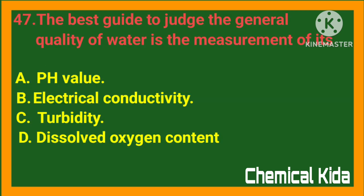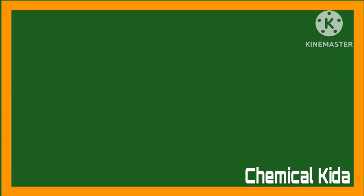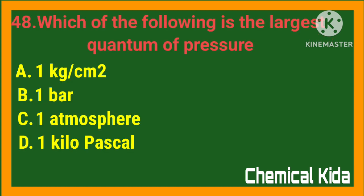The best guide to judge the general quality of water is the measurement of its: a) pH value, b) electrical conductivity, c) turbidity, d) dissolved oxygen content. Answer: b) electrical conductivity.